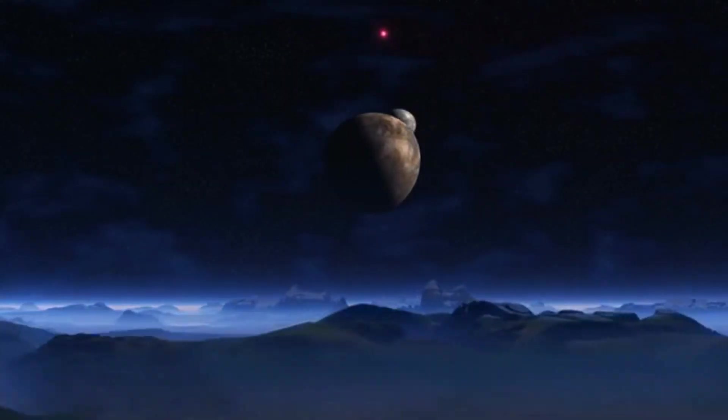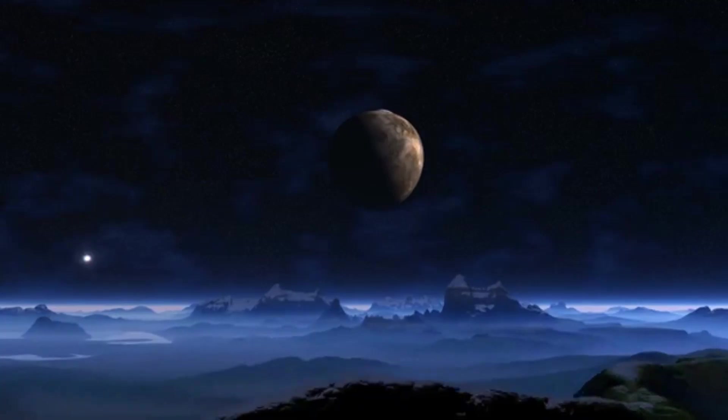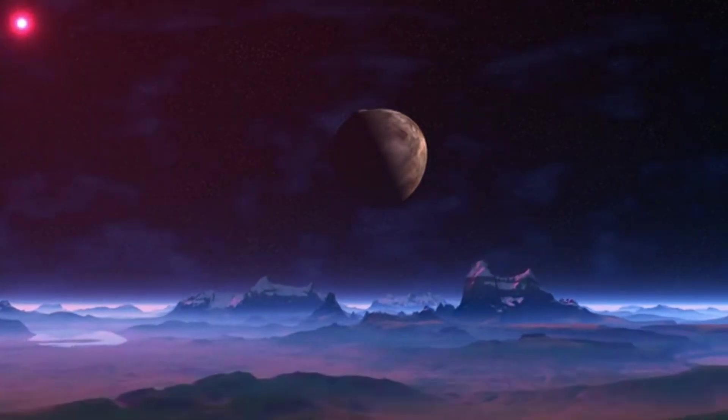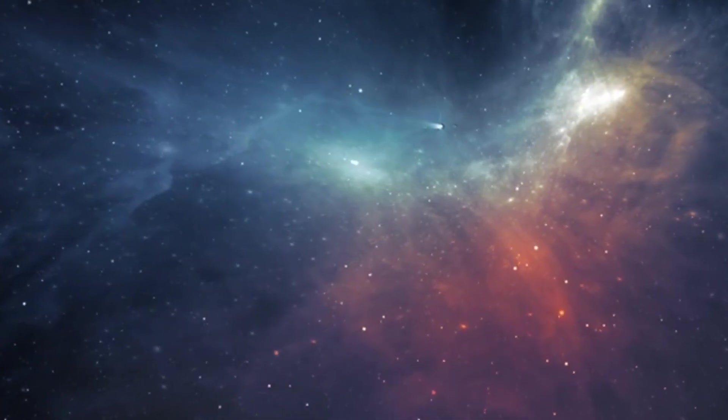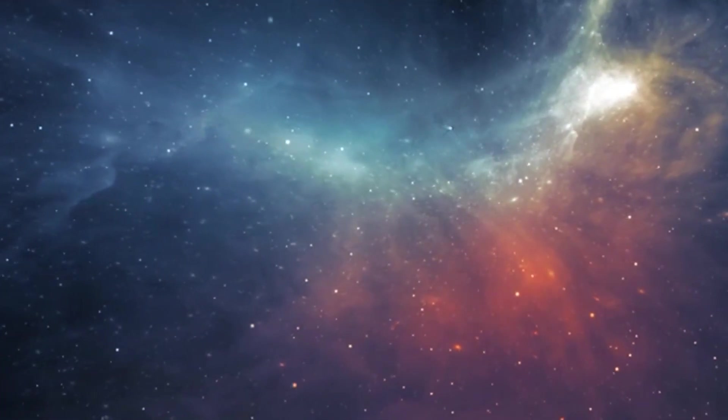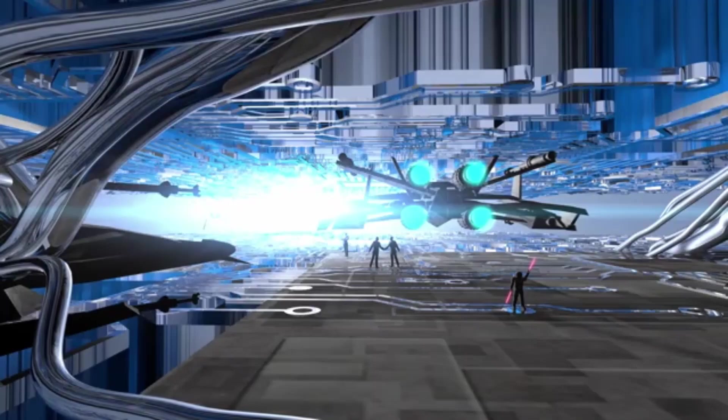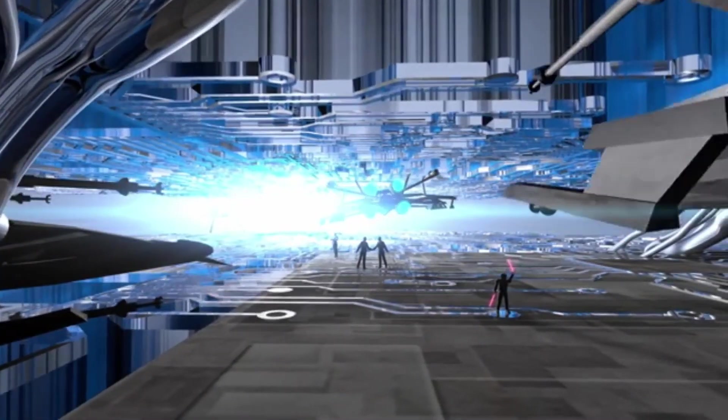Betelgeuse is currently undergoing fusion processes, continually evolving through elements like helium, carbon, oxygen, silicon, and iron. As a red giant star, it fuses helium into carbon in its core, a process that takes millions of years.